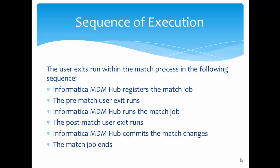Let's see the sequence of execution of user exits within the match process. First, Informatica MDM Hub registers the match job. Then the pre-match user exit runs. Informatica MDM Hub processes the match job after successful completion of the pre-match user exit. After completion of the match job — meaning the processing of records for matching is completed — the post-match user exit will run. Informatica MDM Hub then commits the match changes, ending the match job.